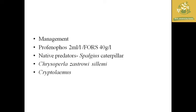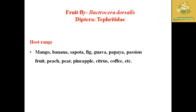We can also manage the papaya mealy bug with chemicals like profenofos 2 ml per liter or chlorpyrifos 40 grams per liter, applied at the recommended dosage. We can also maintain natural native predators like Chrysoperla, Zygogramma, Cryptolaemus, as well as Paederus caterpillus at the field level, which help reduce the incidence of papaya mealy bug.